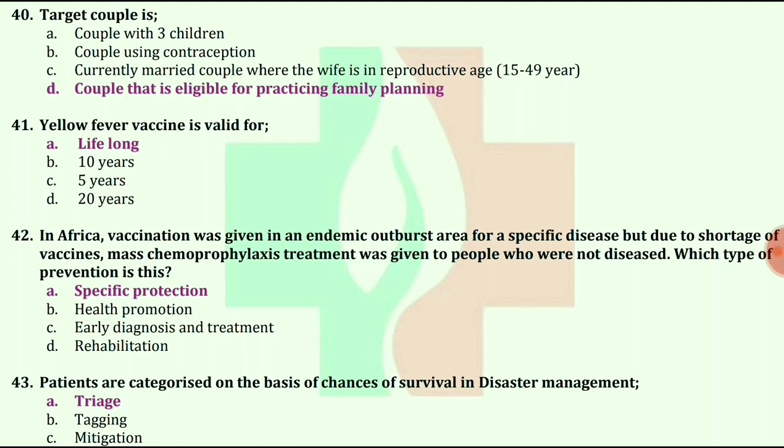In Africa, vaccination was given in an endemic outbreak area for a specific disease, but due to shortage of vaccines, mass chemoprophylaxis treatment was given to people who were not diseased. Which type of prevention is this? Specific protection.